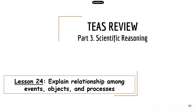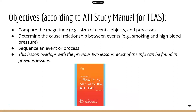Hey everyone, today we're going to look at Lesson 24: Exploring Relationships Between Events, Objects, and Processes. Here are the objectives from ATI. First, you need to be able to compare the magnitudes — for example, size — of events, objects, and processes.